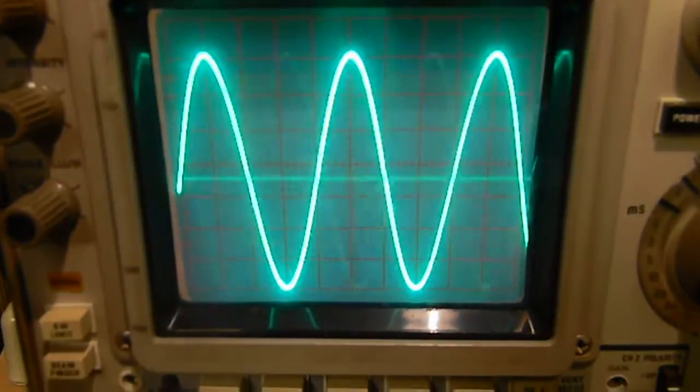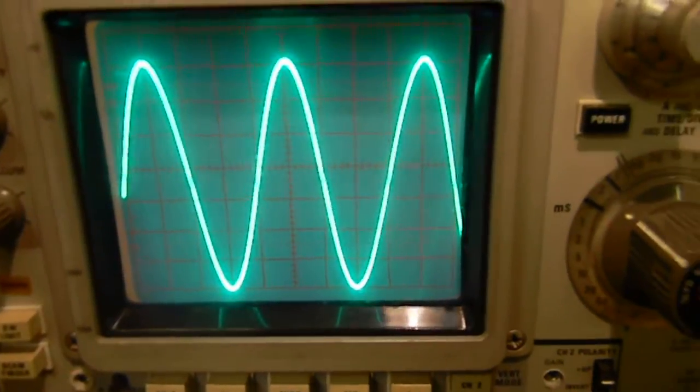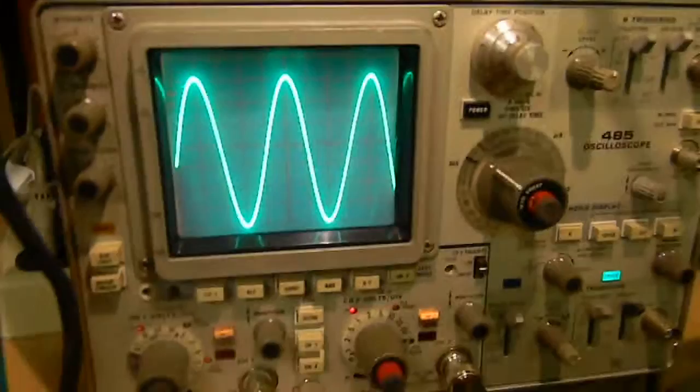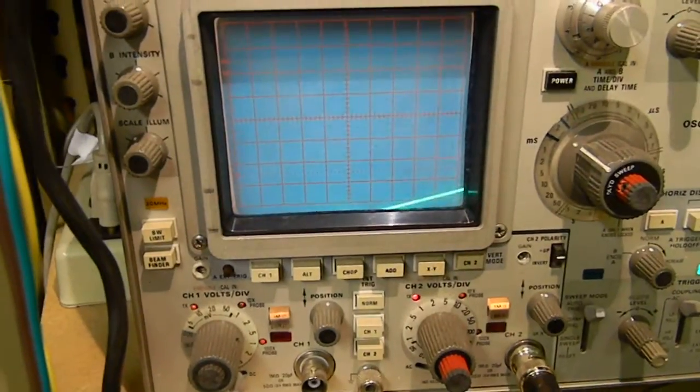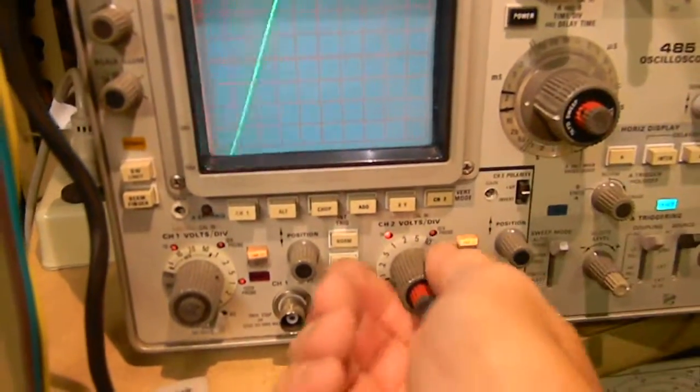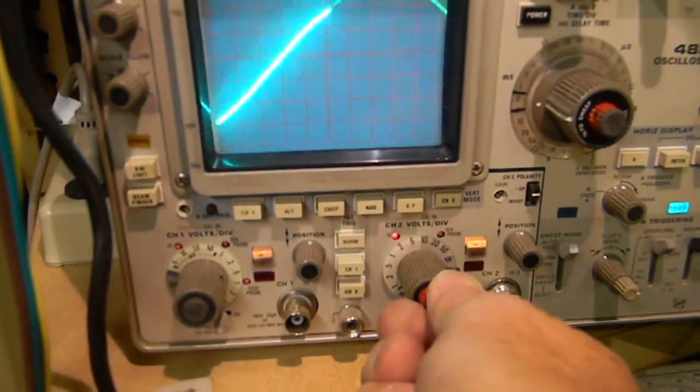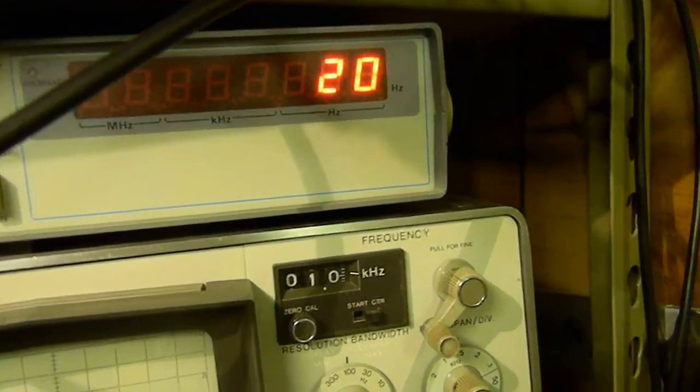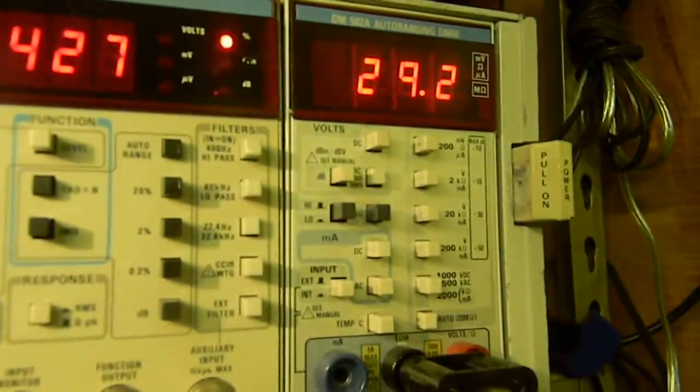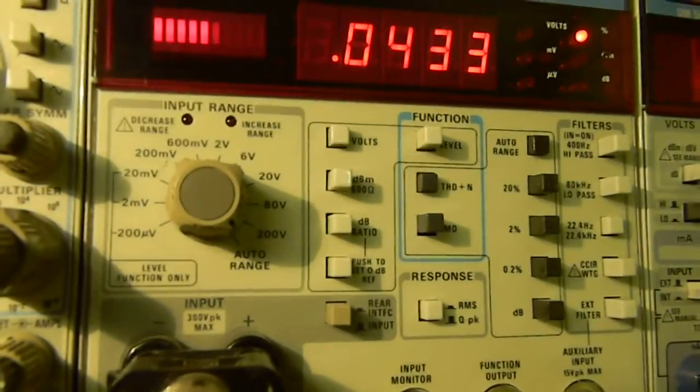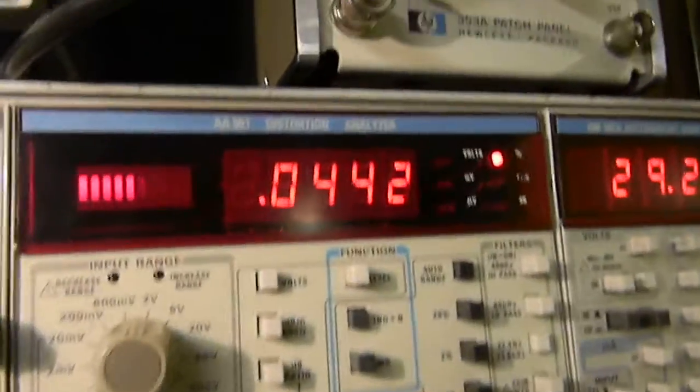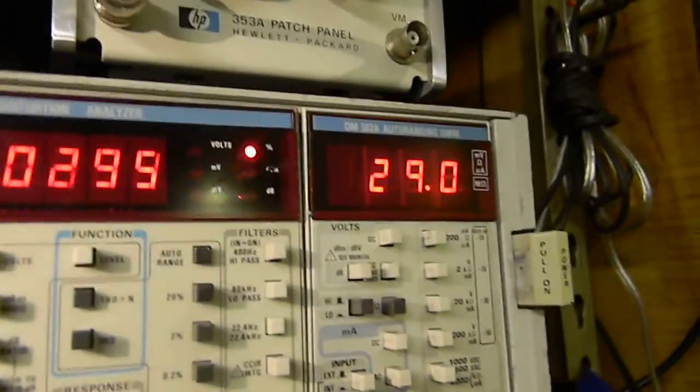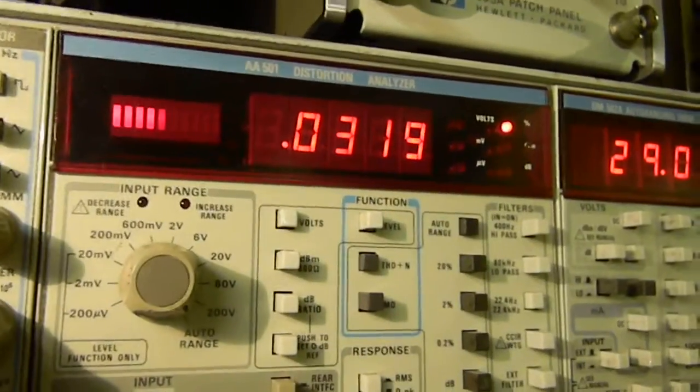Let's run it down to 20 hertz. There it is, 20 hertz, 29.2, so still running at 29 volts. 0.04%. That's on the right channel. Go to the left channel, still 29 volts, 0.03%. It's absolutely marvelous, just a really romping stomping amplifier.